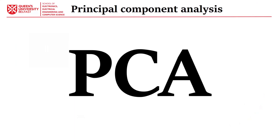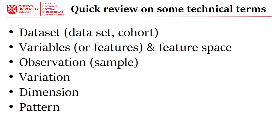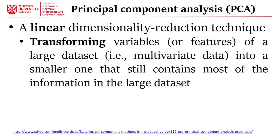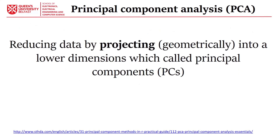The next part covers principal component analysis. PCA is a linear dimensionality reduction technique in which we transform variables or features of a large dataset — multivariate data — into a smaller one that still contains most of the information in the large dataset.